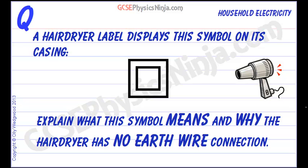A hairdryer label displays this symbol on its casing, and it's two squares one inside of the other. Explain what this symbol means and why the hairdryer has no earth wire connection.